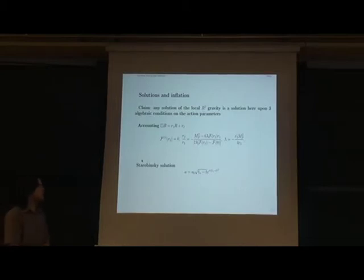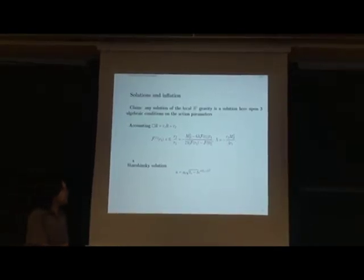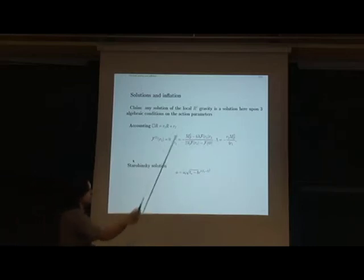One of the tricks which we know is that we can employ such an ansatz for our background. Such an ansatz, in fact, is not some random combination. It is, in fact, would you consider a local R-squared gravity, it's one of the equations of motion. The trace of the Einstein equations in R-squared gravity. It means automatically that if you have R-squared gravity and if you have any solution in R-squared gravity, it's automatically solution here upon three conditions on your parameters.